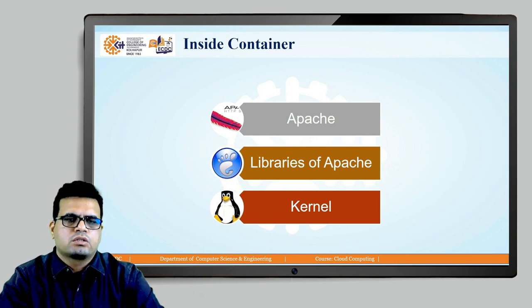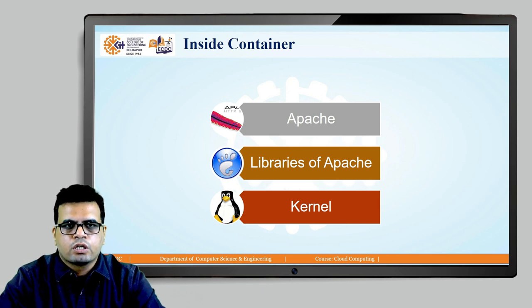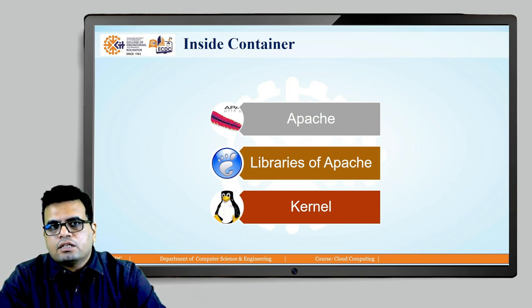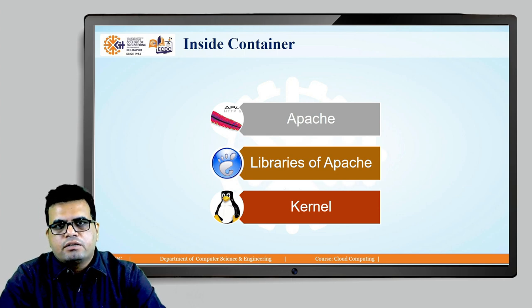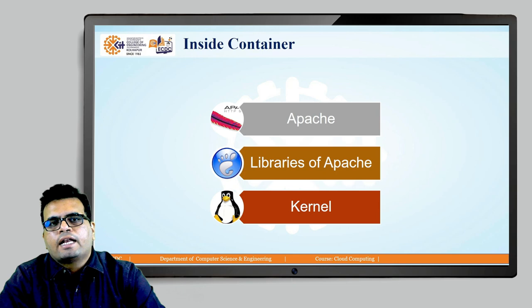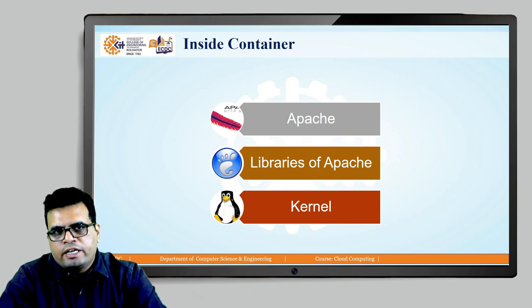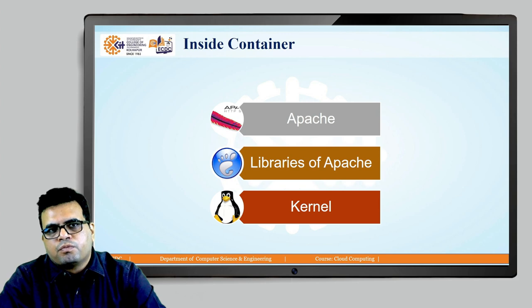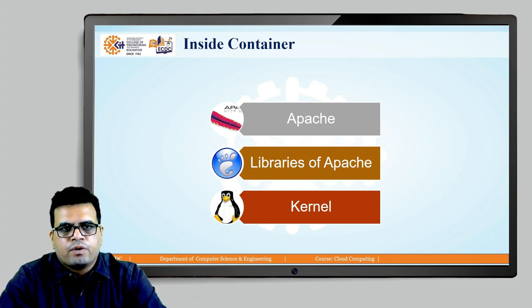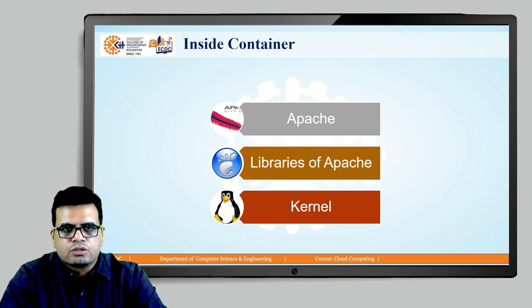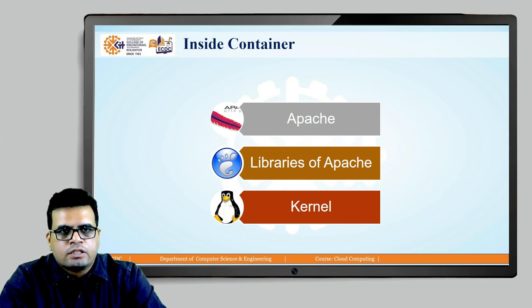If you use a container which has Apache inside it, you are not bothered about installing Apache on your computer. Installing Apache manually would involve software dependencies and package requirements, but all of that is removed. Just take a container image which has Apache inside it, execute that container using the Docker environment, and you can use Apache on your computer. By putting the appropriate files into the Apache HTTP directory, you will have a webpage running on the HTTP port. All the headache of deploying, configuring, and managing the libraries and Apache server is removed — just take an image, put your code inside, and launch the container.